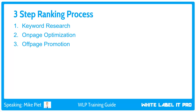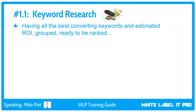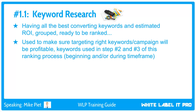Keyword research means finding all the best converting keywords, what their search volume is, an estimated ROI they have, grouping them, and choosing the best keywords that will ultimately equal a big ROI from the SEO campaign. These keywords and their data are used to make sure the SEO campaign will be profitable, and they'll also be used in step two for creating content and step three for promotion.